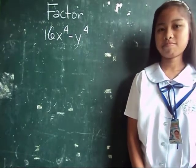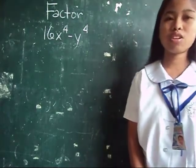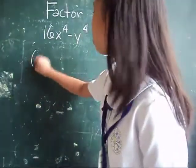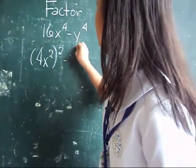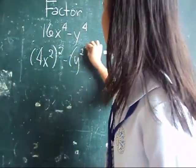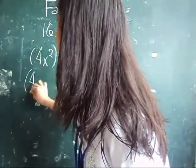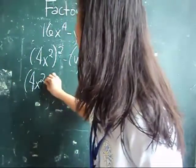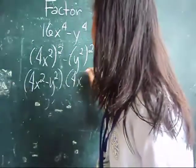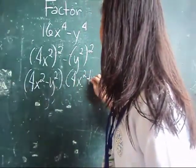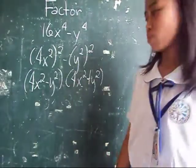Factor 16x to the power of 4 minus y to the power of 4. We write this in the form difference of two squares. The factors are 4x squared minus y squared and 4x squared plus y squared. But we can still factor 4x squared minus y squared further.